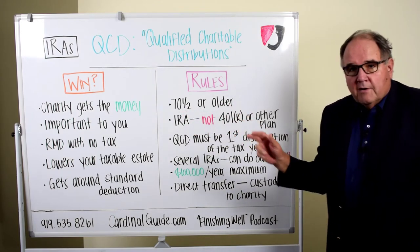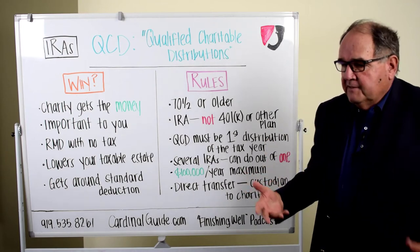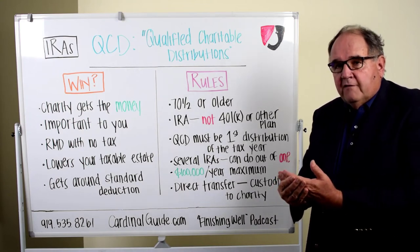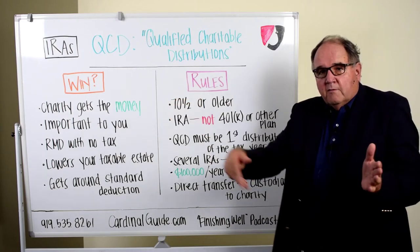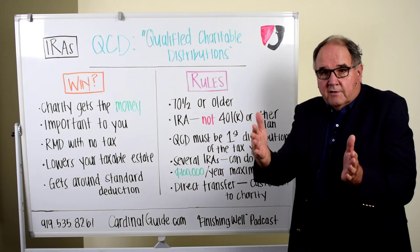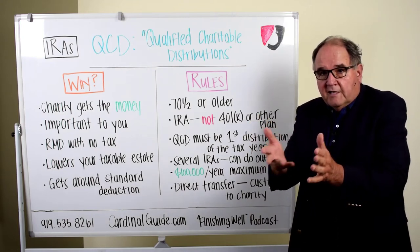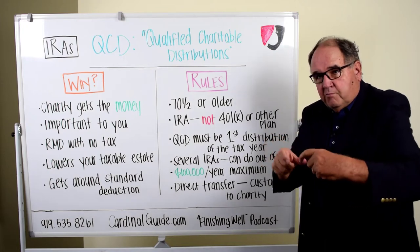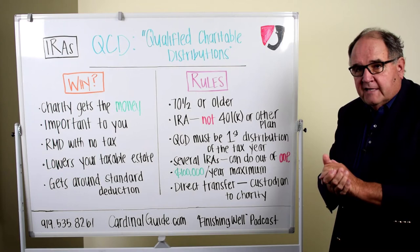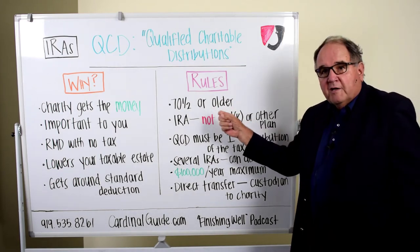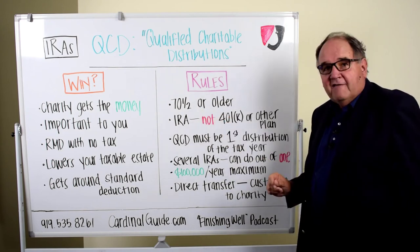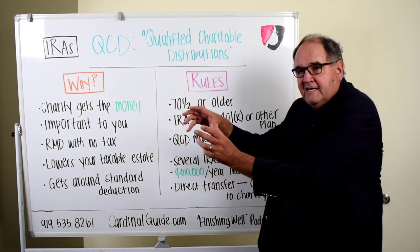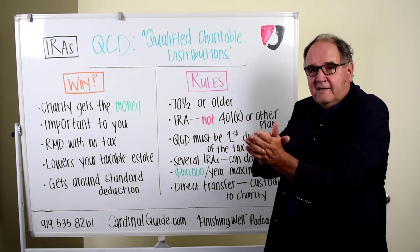The first rule is you need to be 70 and a half or older. Some of you watching may be 65 and think this doesn't apply to you for five years — but it could. If we're doing a financial plan for you, we're going to look at your whole retirement and your charitable giving. If you want to give away money or create a legacy, knowing we can start QCDs at 70 and a half lets us plan for charitable giving in the future. To actually do one in 2021, you need to be 70 and a half this year.